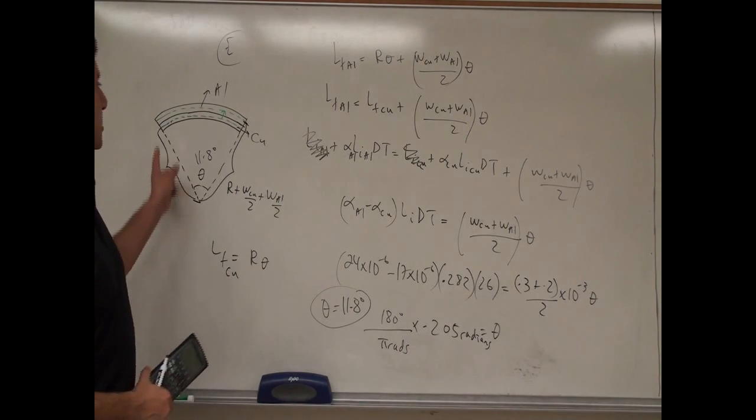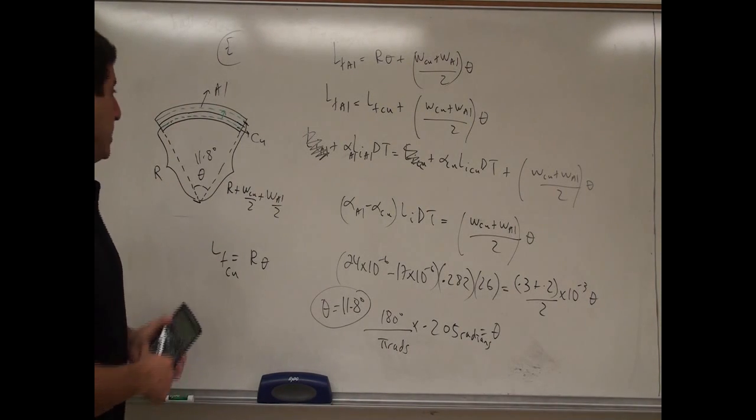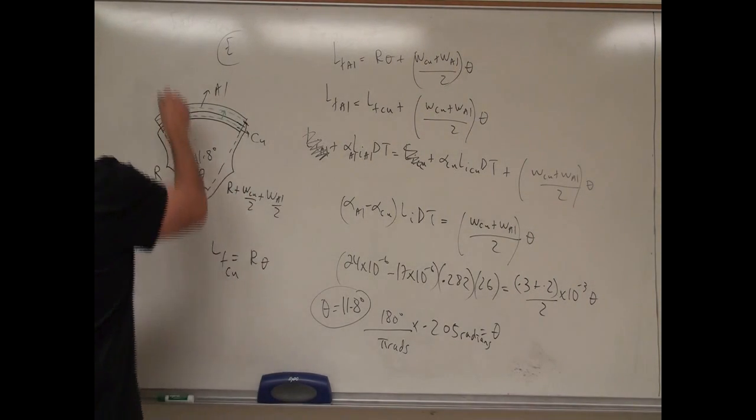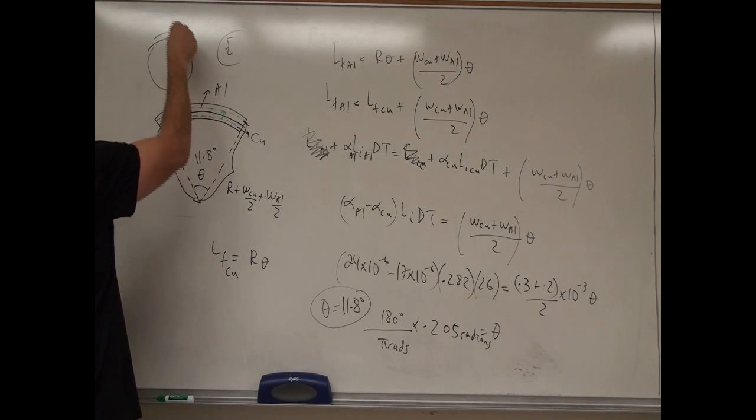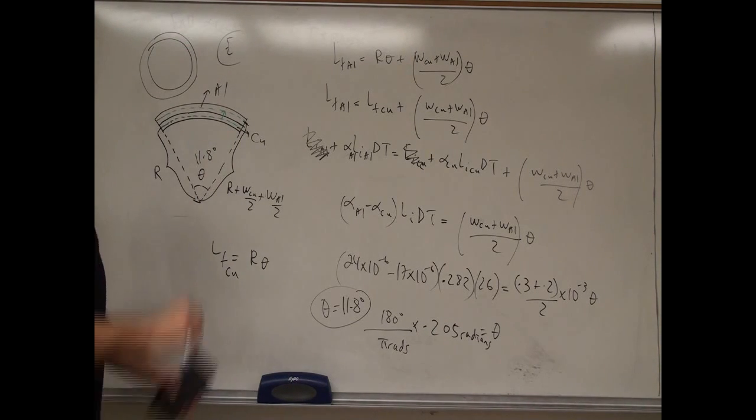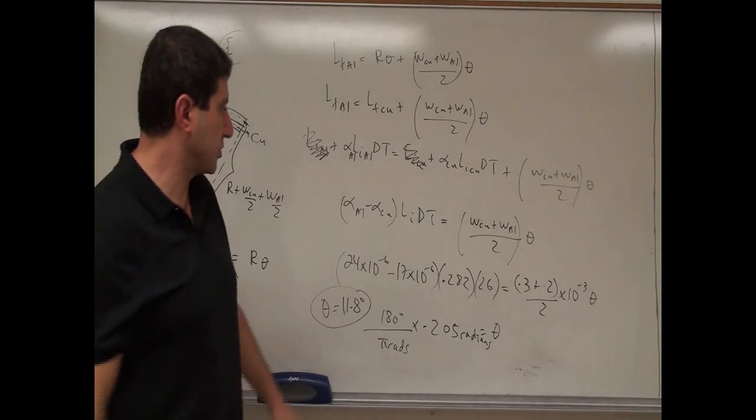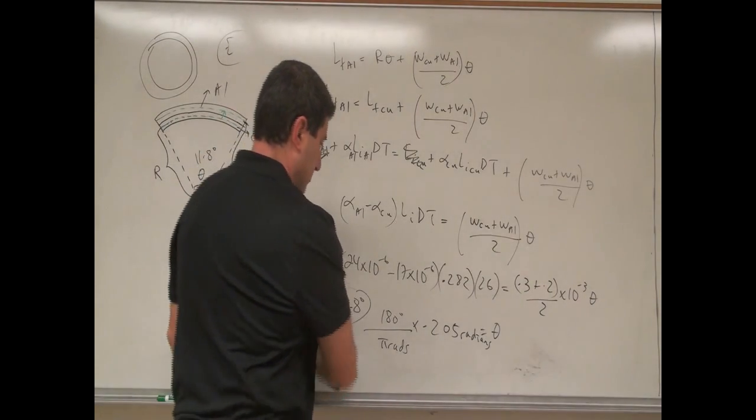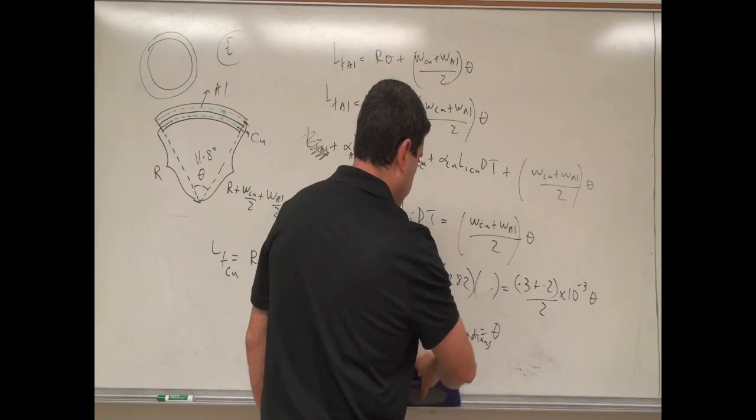Now, the problem could also ask us, what should the final temperature be so that the whole strip makes a circle, like this? We could actually do it so that it curves up and makes a complete circle. So then we would solve for delta t.